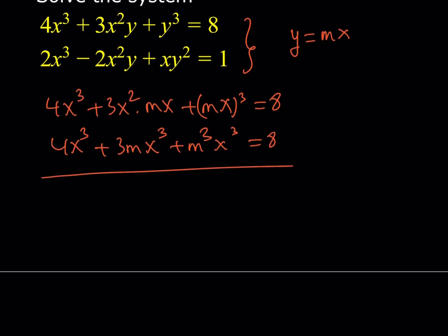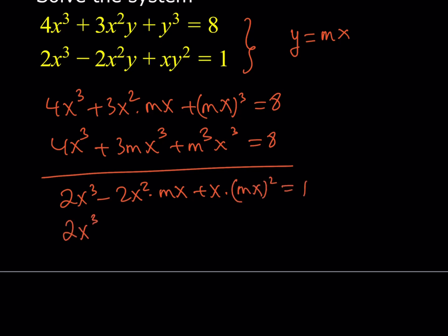In the second equation, we're going to do the same thing: 2x cubed minus 2x squared multiplied by mx, plus x multiplied by (mx) squared. Simplifying, this should be 2x cubed minus 2mx cubed plus m squared x cubed is equal to 1.